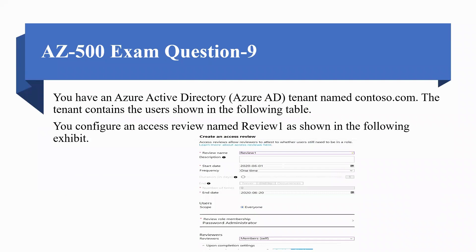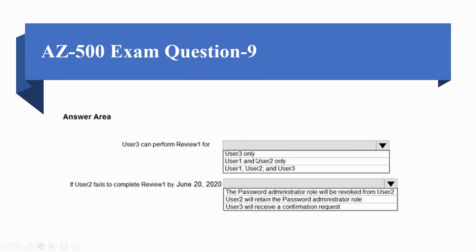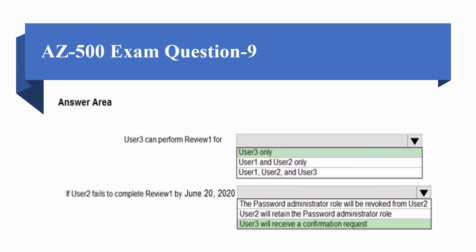You have an Azure Active Directory tenant named contoso.com. The tenant contains users shown in the following table. You configure an access review named Review1 as shown in the following exhibit. The answers are: User 3 can perform Review1 for User 3 only. If User 2 fails to complete Review1 by June 2020, User 3 will receive a confirmation request.